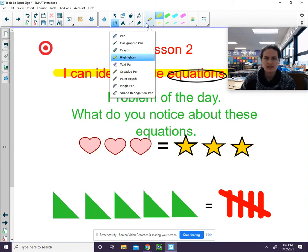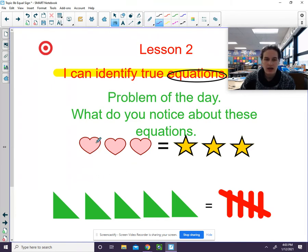Right away, we see that we have one, two, three hearts on this side. And we have one, two, three stars on this side. So we can think of this as three equals three. Is that a true equation? Are both sides the same? Yeah, they are. So we can say that is a true equation.